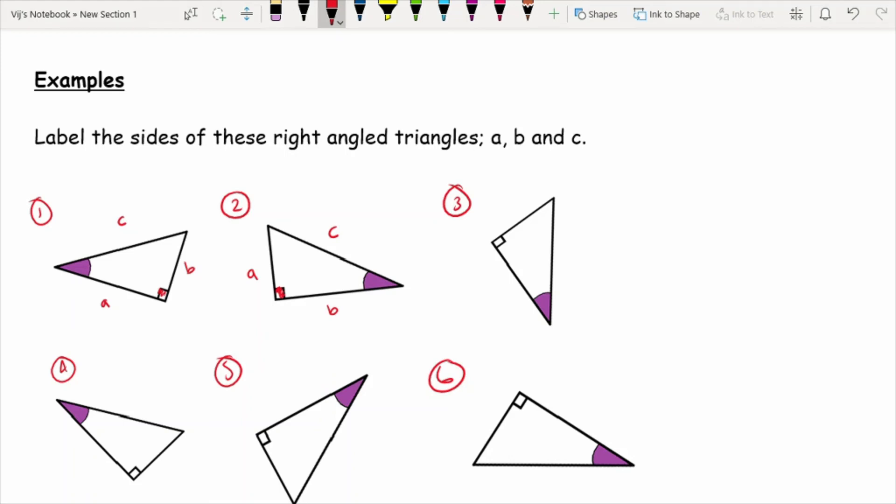And also, just try and make sure that your A's don't look like nines. Because you don't want to get confused or make a silly mistake based on your handwriting. So again, look out for the right angle. The side that's opposite is always C. And your other two sides are A and B.